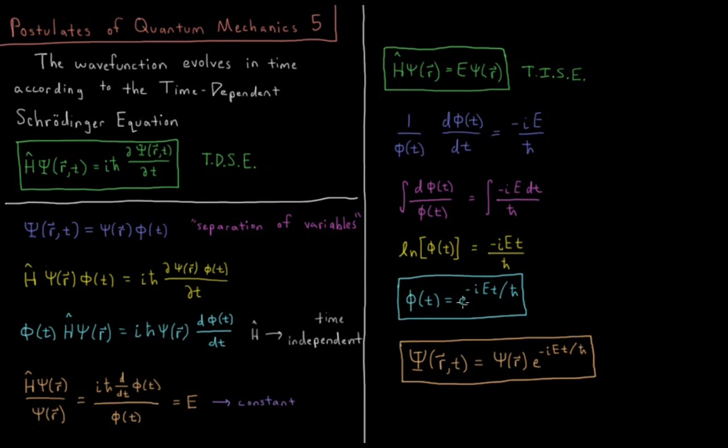Notice when we multiply, its complex conjugate is E to the IE t over h-bar. Its complex conjugate is 1 over this number. So when we do phi star times phi, we're just going to get 1. So it's not actually affecting the magnitude or the position of the wave function. It's just rotating around the complex plane in time. And we'll see the implications of that in a few future videos.